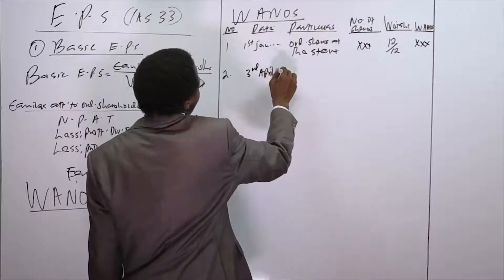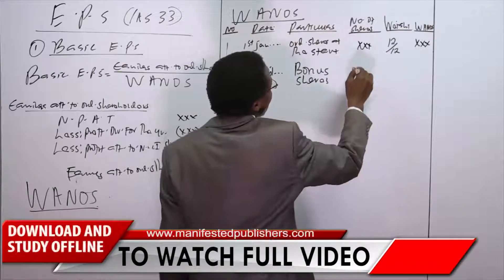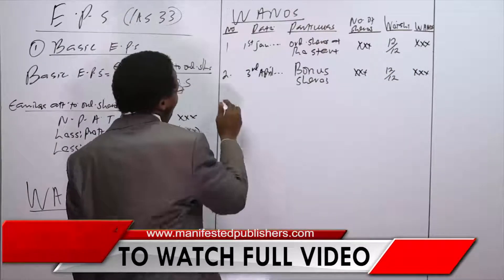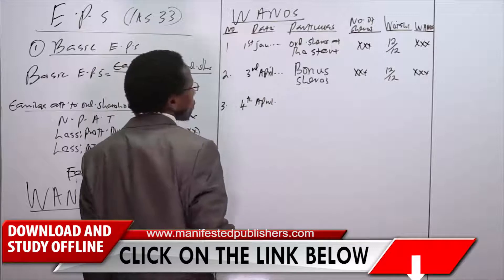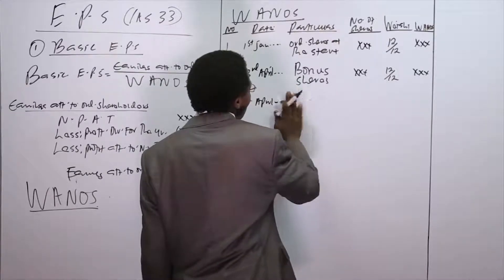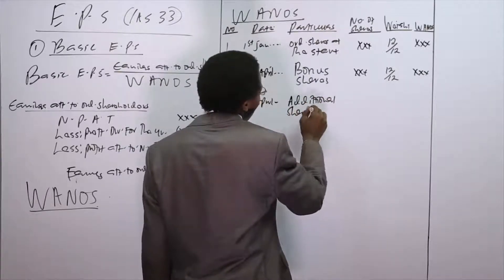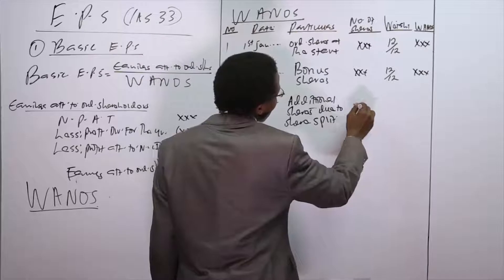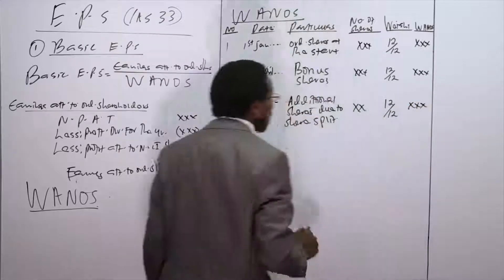Number two: maybe on third April there are bonus shares. Bonus shares are free shares, so you don't weight them on a time basis. Number three: on fourth April there is a share split — additional shares due to a share split. These additional shares are also not weighted on a time basis.